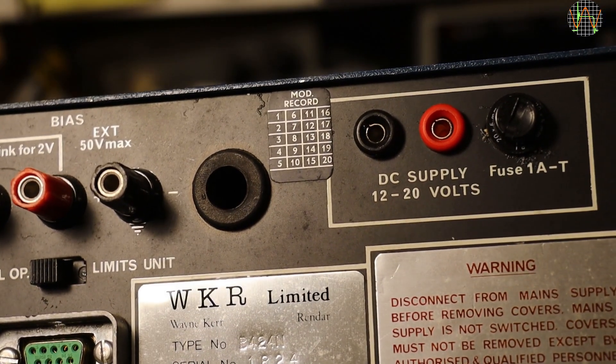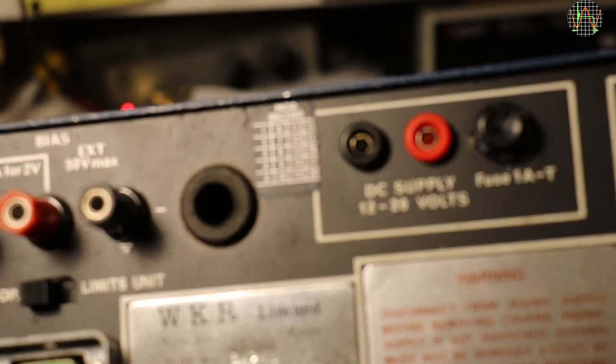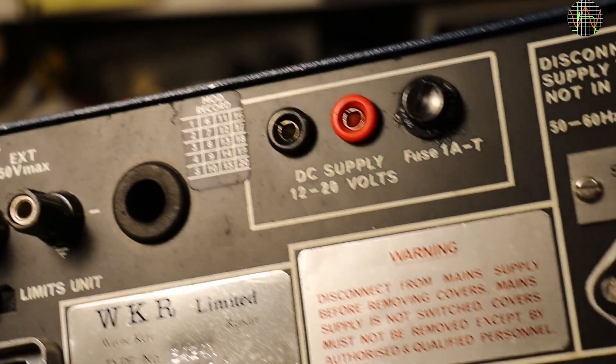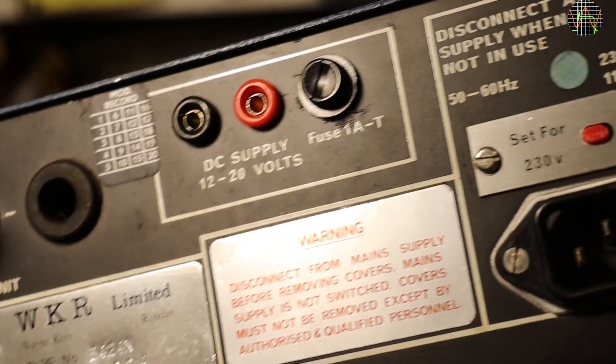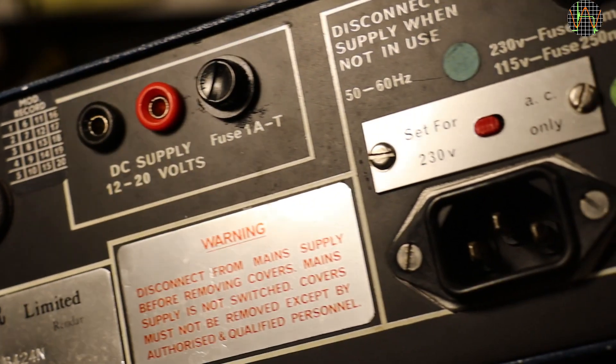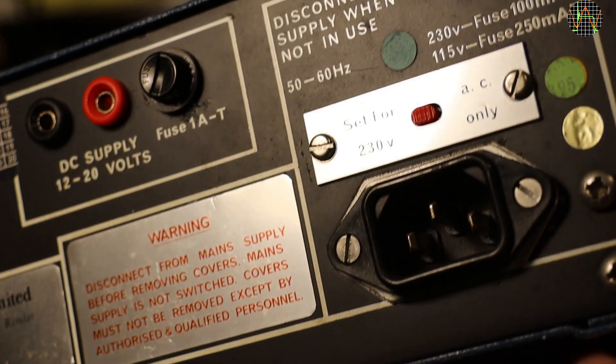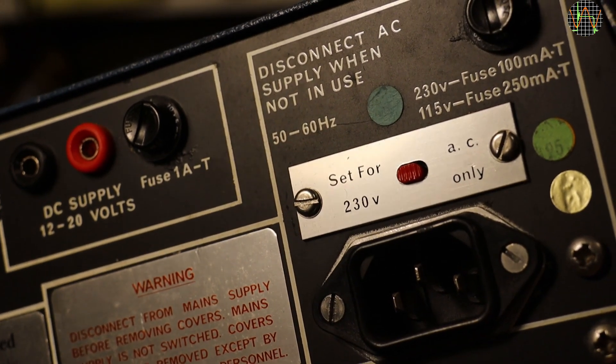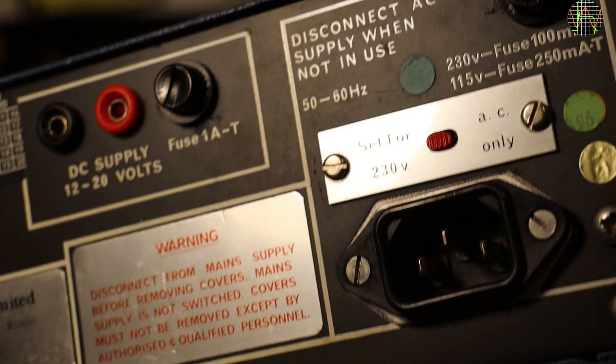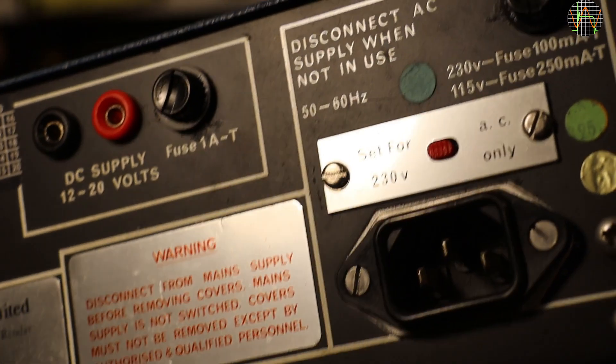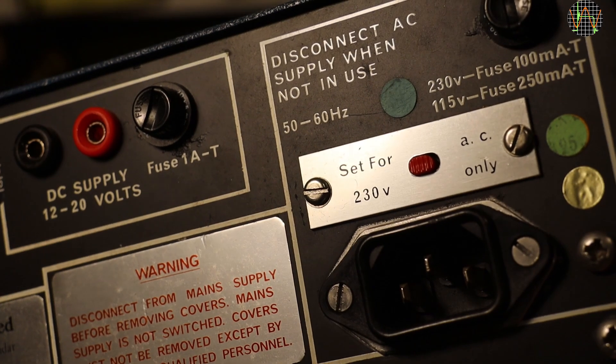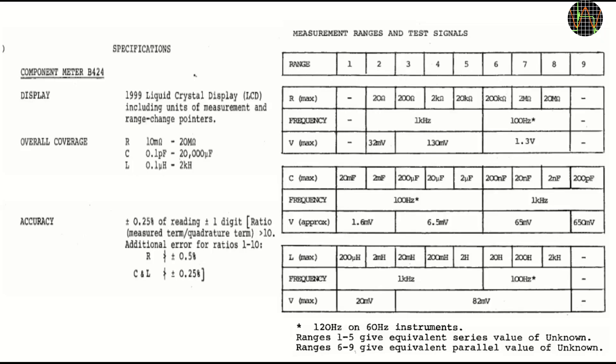There are connections for a DC power supply between 12 and 20V. This allowed for example operating the unit from external batteries, like two PP9s in series. And finally there is the mains connection. As the label explains, the B424 mains connection is not controlled by the front switch, or indeed any switch, so you are supposed to physically pull the plug when it is not in use.